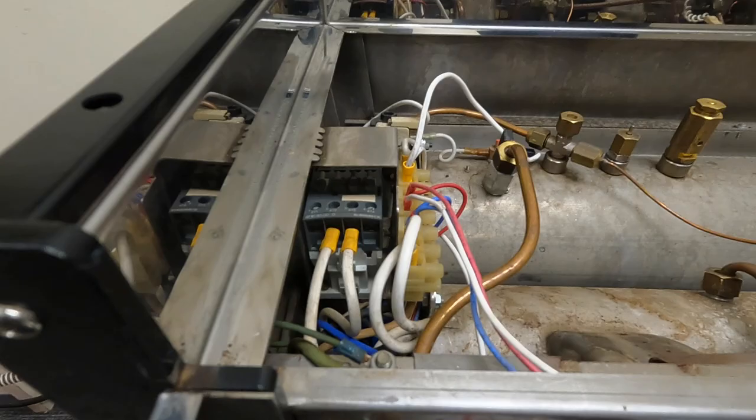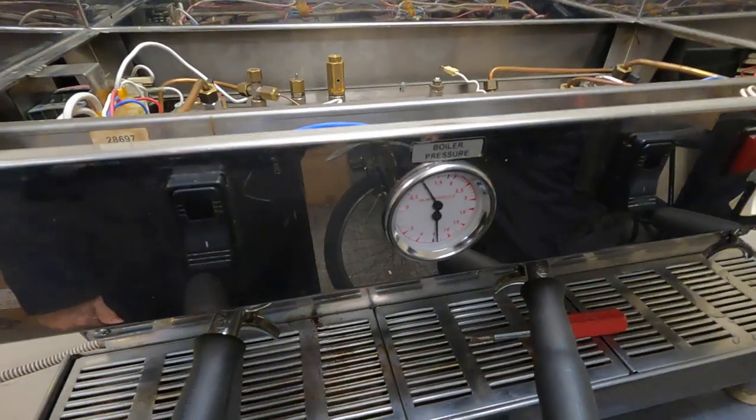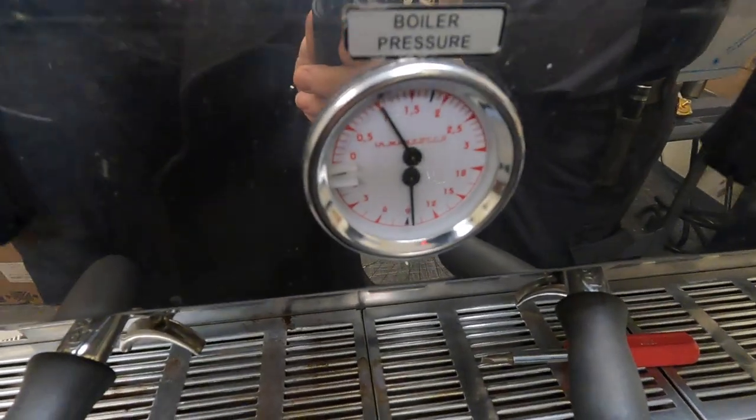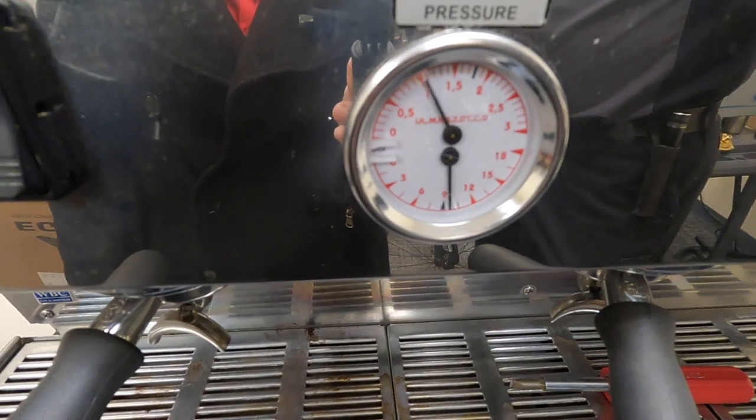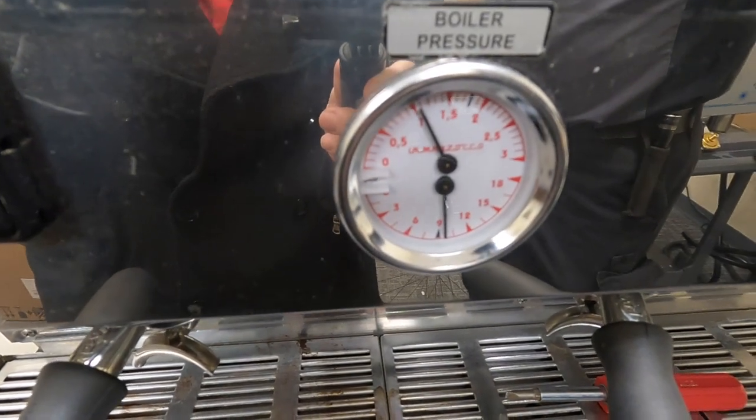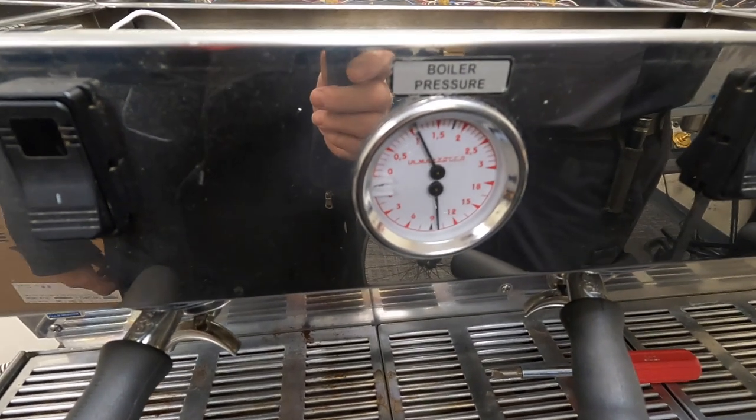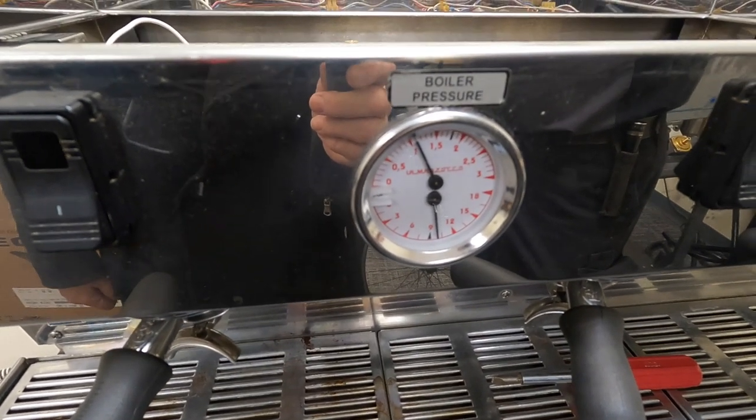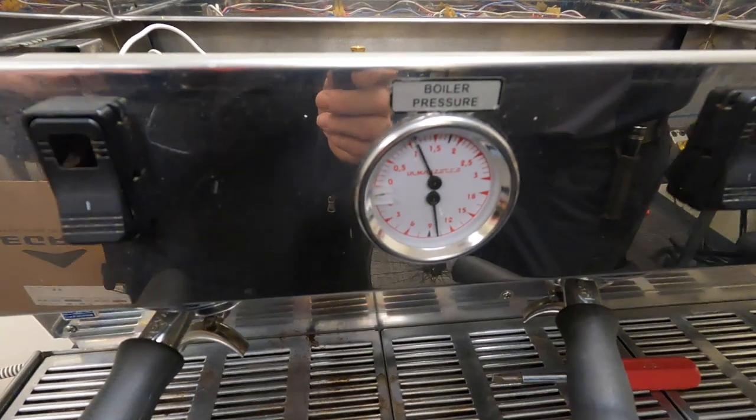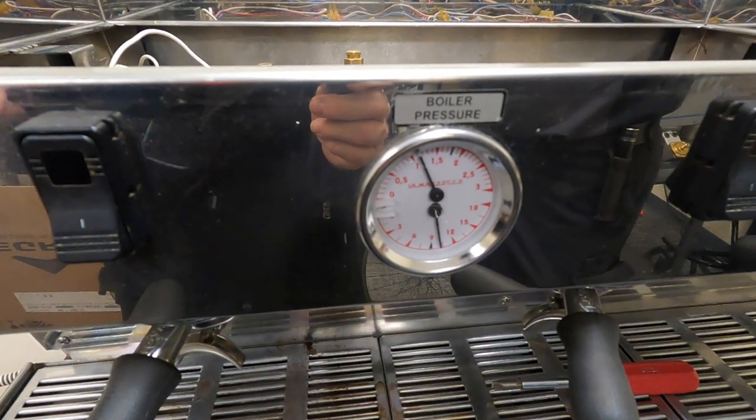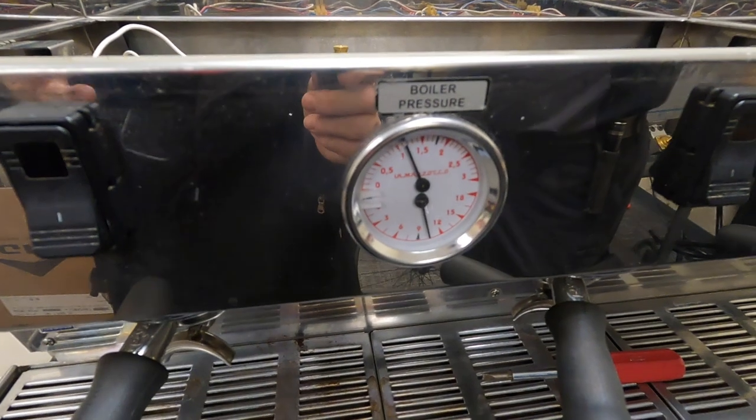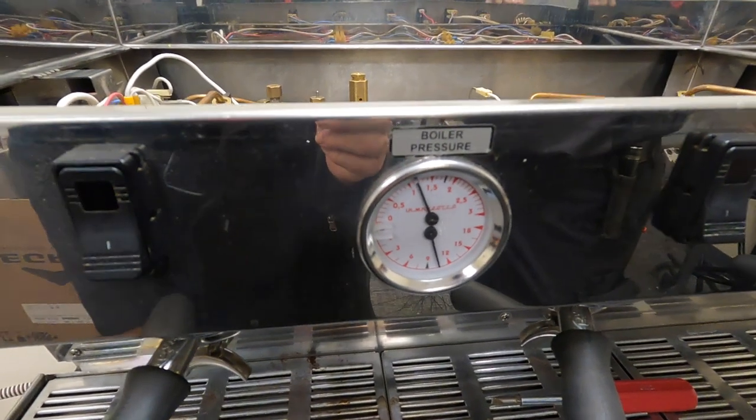I did do a slight adjustment. It was at 1.3 so we did a slight adjustment, we'll see where it climbs to. It will take not even a minute. After this you're going to show us how to do the brew? Yeah, after this we'll do the brew. It's the temperature that we're adjusting, the temperature.